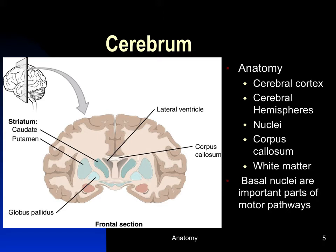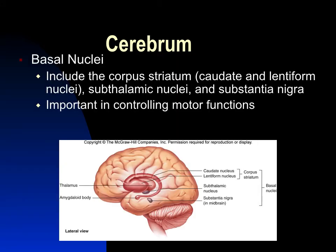Inside the cerebrum are nuclei — areas of gray matter with localized functions. These include the striatum and are collectively referred to as basal nuclei. They form a ring at the base of the cerebrum and are important in motor pathways and other functions.